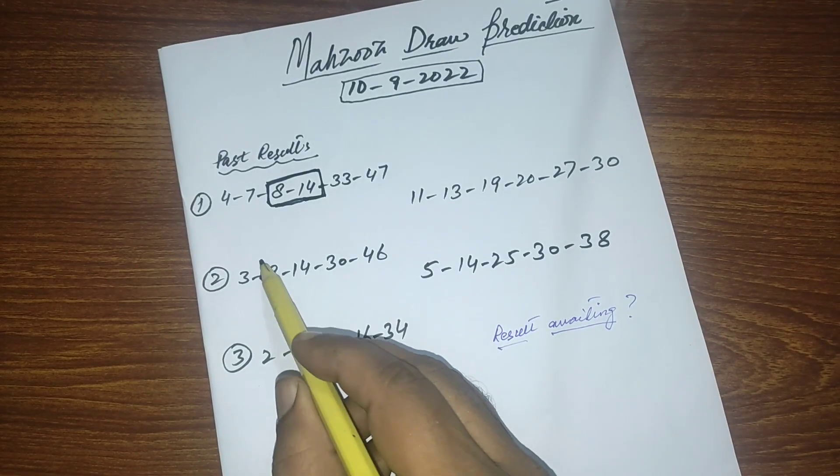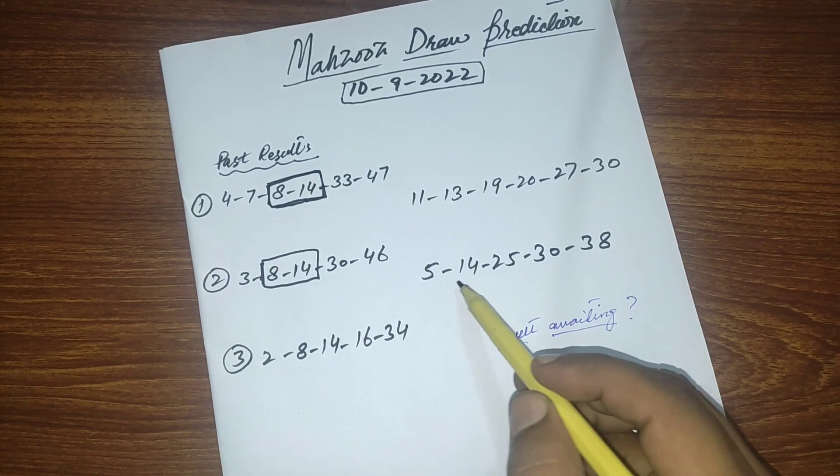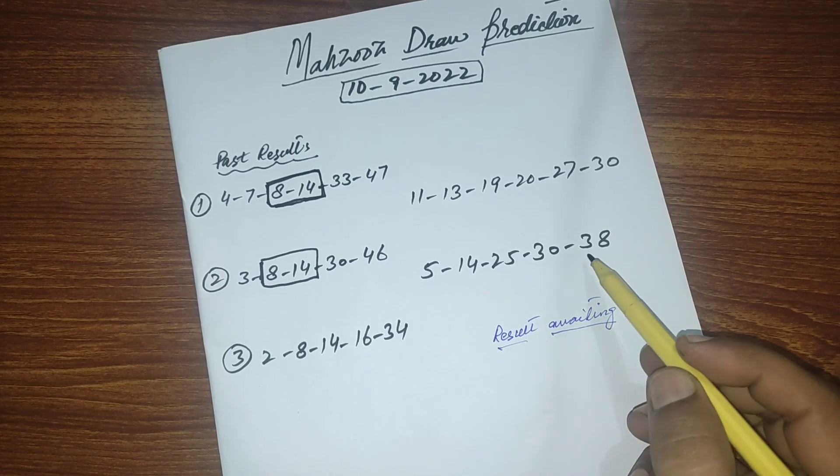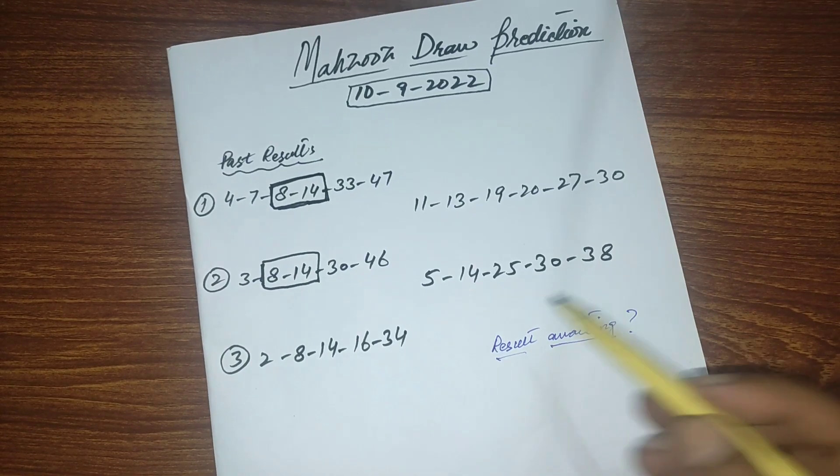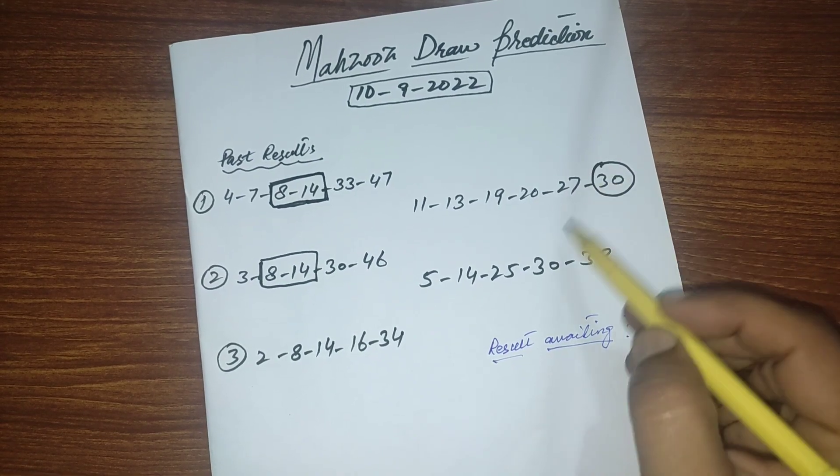The second time when this thing happened, you can see 8 and 14 came together. After that the result was 5, 14, 25, 30 and 38. You can see the same number in both results is 30.